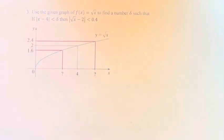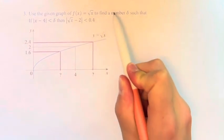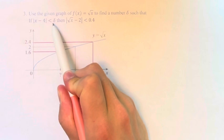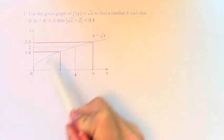Hello, and welcome back to another video. In this problem, we're asked to use the given graph of f(x) equals the square root of x to find a number delta such that if the absolute value of x minus 4 is less than delta, then the absolute value of the square root of x minus 2 is less than 0.4.